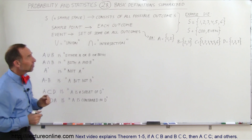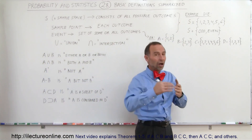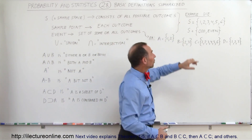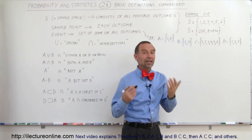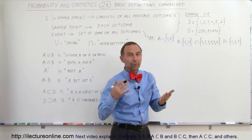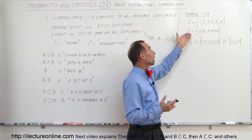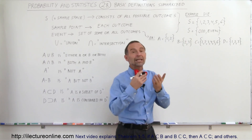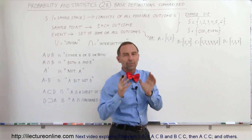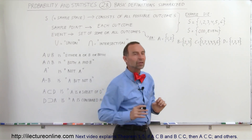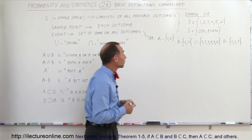For example, if we have a single die that we can toss, the sample space may be all the possible numbers you can get on the die: one, two, three, four, five, six. Or you can say the sample space can be represented by whether you get either an odd or an even number. They're both sample spaces in the same kind of situation.